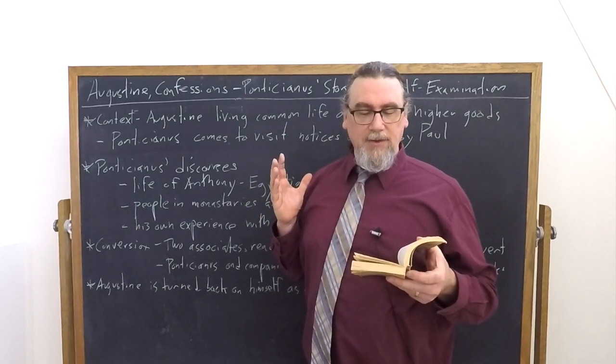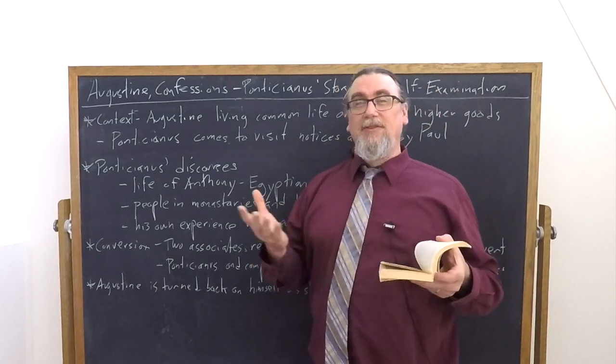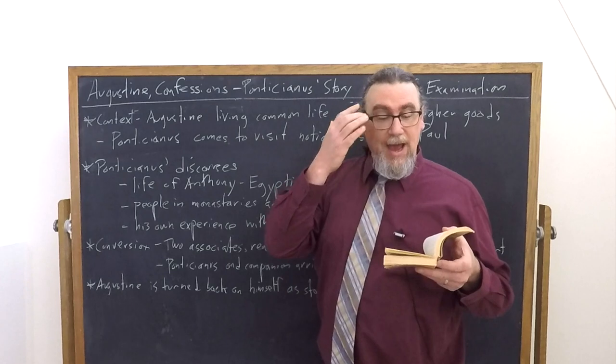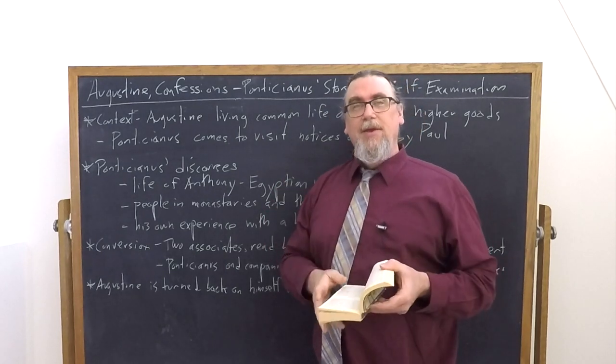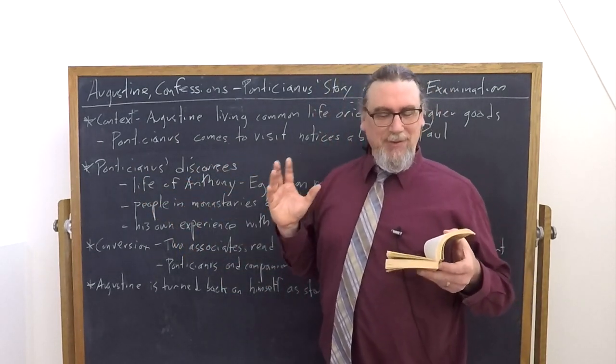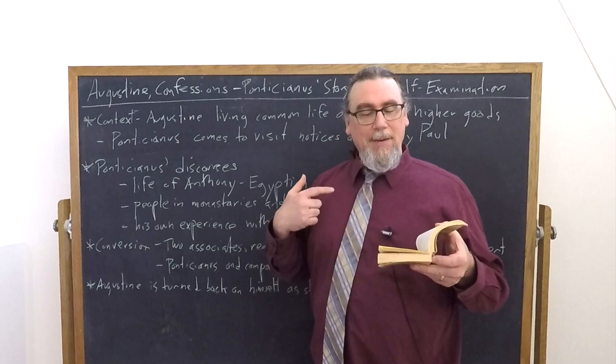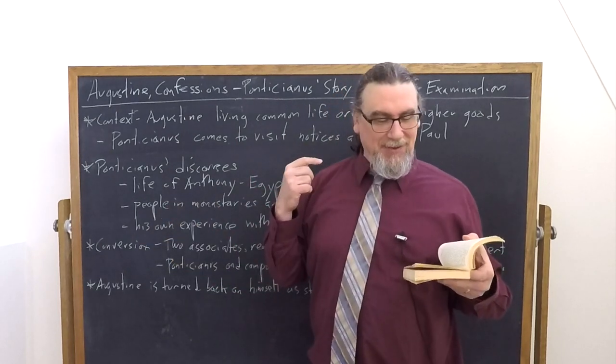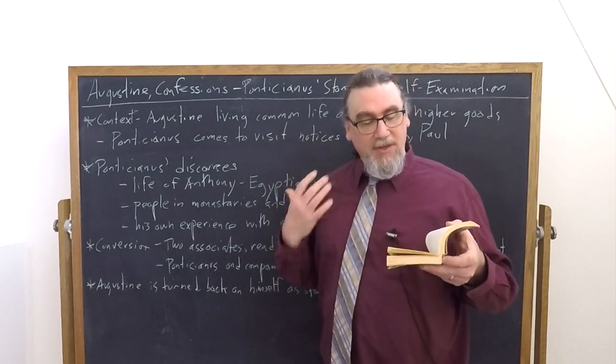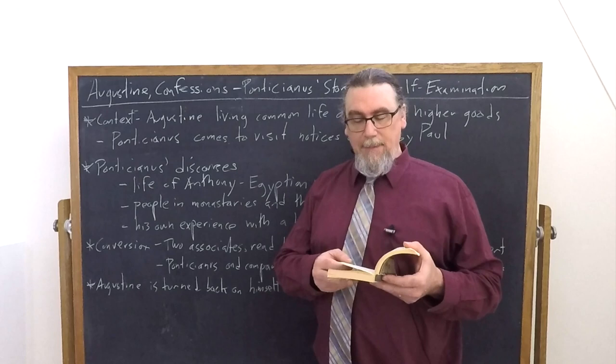And Augustine says, I didn't really want to look on myself. You stood me face to face with myself. So that I can see why, how I actually am, how foul I was, how deformed, how defiled, how covered with stains and sores. I looked and I was filled with horror. And what's the natural reaction to that? I don't want to look at this. Where can I go instead? And he says, there was no place for me to flee to away from myself. I tried to turn my gaze from myself, but Ponticiana still went on with the story that he was telling. And once again, you placed me in front of myself and thrust me before my own eyes. So that I could see how badly off I was.